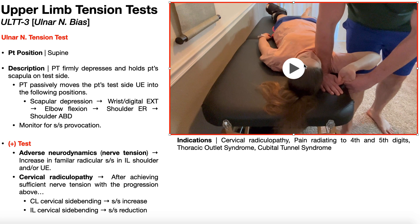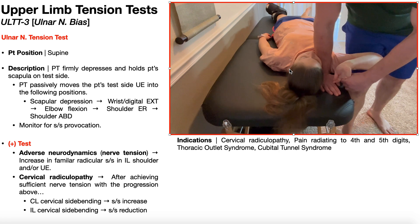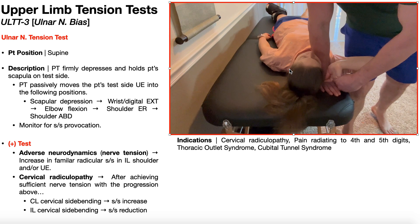After adding shoulder external rotation, I move her into shoulder abduction. Essentially, what I'm trying to do is make the hole created by her first and second digits in the OK sign come close to her eye or ear. There's shoulder abduction, and that's approximately the final position for the arm in the ulnar nerve tension test.